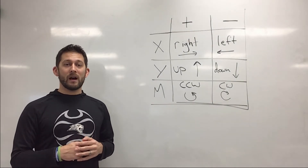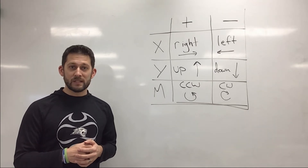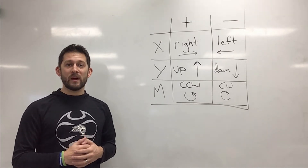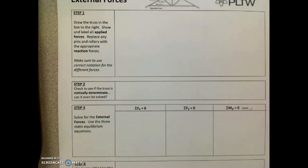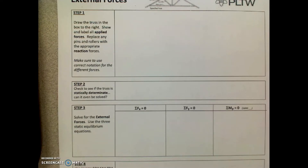We're going to get into an example using a beam to give us an intro into external forces, then we'll get into external forces for a full truss. We've got a beam with a couple forces acting on it, and we're going to use this truss template to solve it. Step one is drawing in your truss, step two is finding static determinacy, and so on. Make sure you have a copy of the template in front of you.